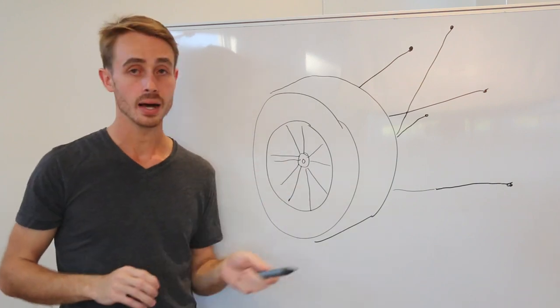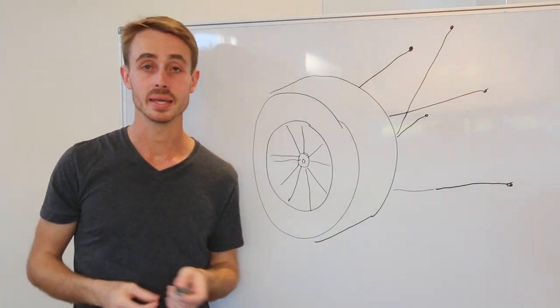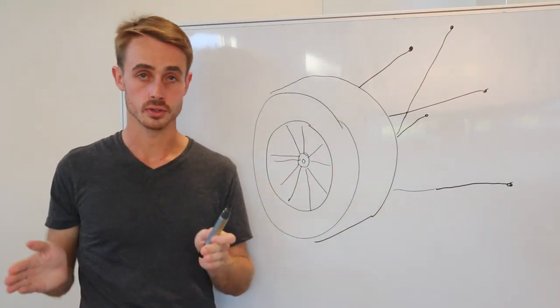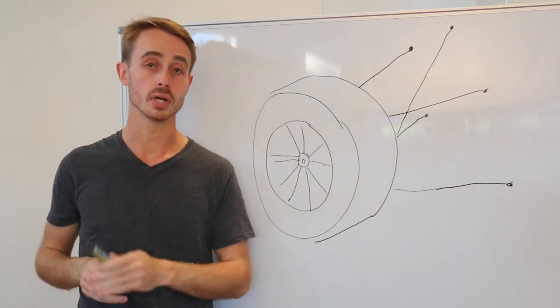Now specifically we're going to be looking at caster, camber, kingpin inclination angle and scrub radius. Now these are all different concepts so I'm going to split them up into four different videos.